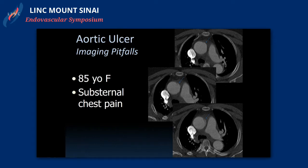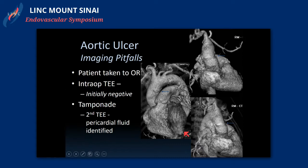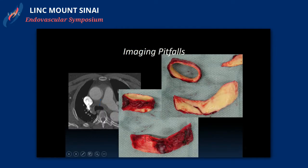Case three, with our cardiothoracic colleagues: an 85-year-old female with substernal chest pain where CT scan imaging was challenging — you could call it a focal dissection or a penetrating ulcer, with a defect in the ascending thoracic aorta and an unclear pericardial space. The patient was taken emergently to the OR based on that flap alone. Intraoperative TEE was initially negative, but the patient then developed pericardial fluid and subsequent tamponade requiring pericardiocentesis. At repair, the same defect seen on CT was confirmed along with associated intramural hematoma — retrospective review showed this was a large intramural hematoma that was starting to develop.